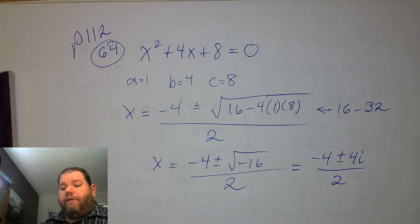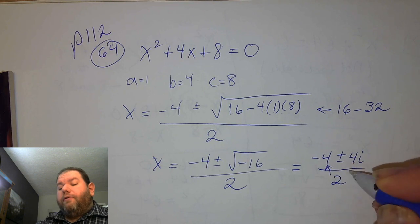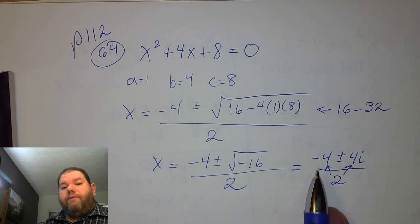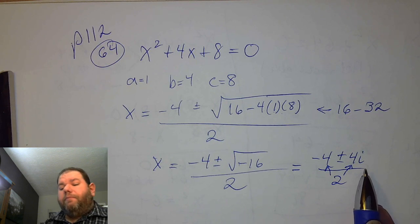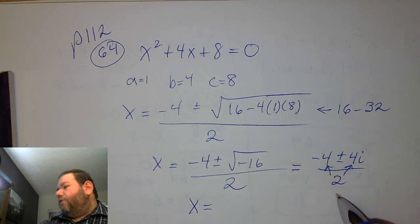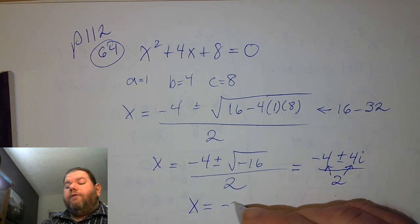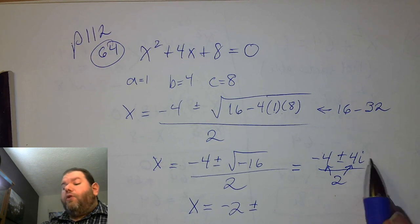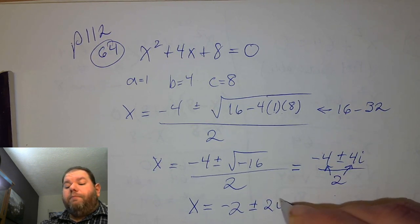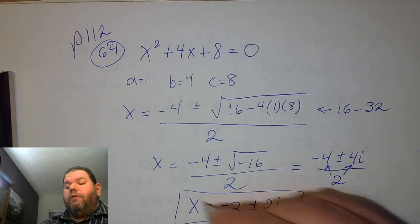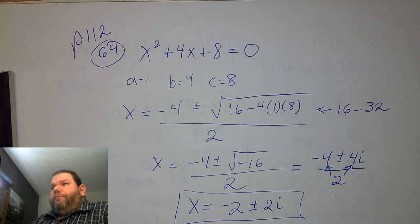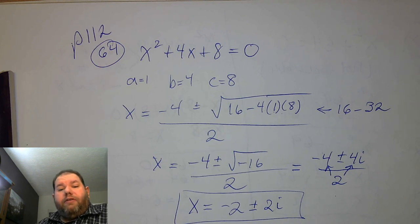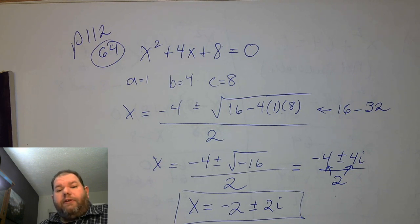The 2 on the bottom divides both numbers on top: the negative 4 and the 4i. So 2 divides into both. Negative 4 divided by 2 is negative 2, and 4i divided by 2 is 2i.